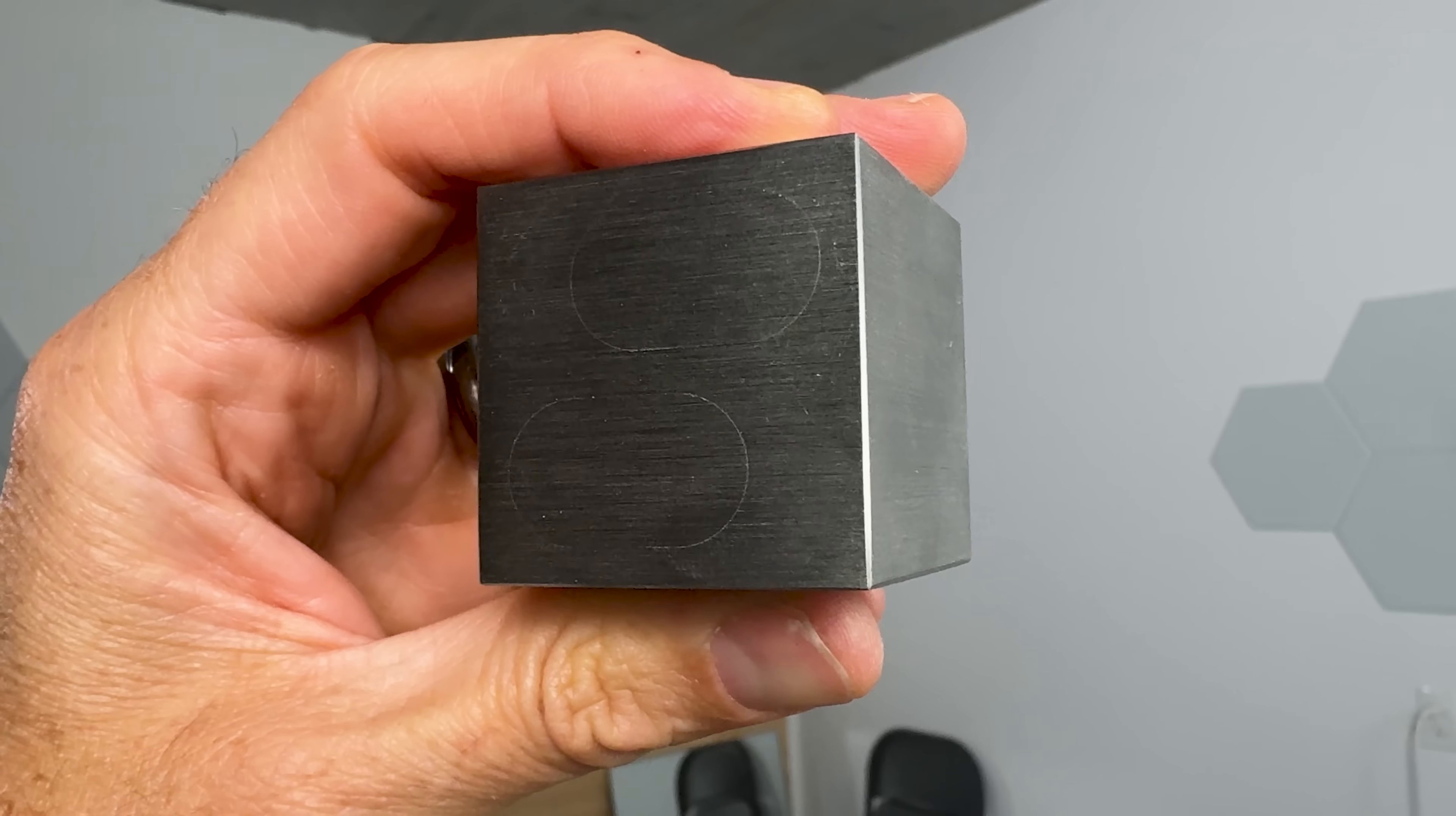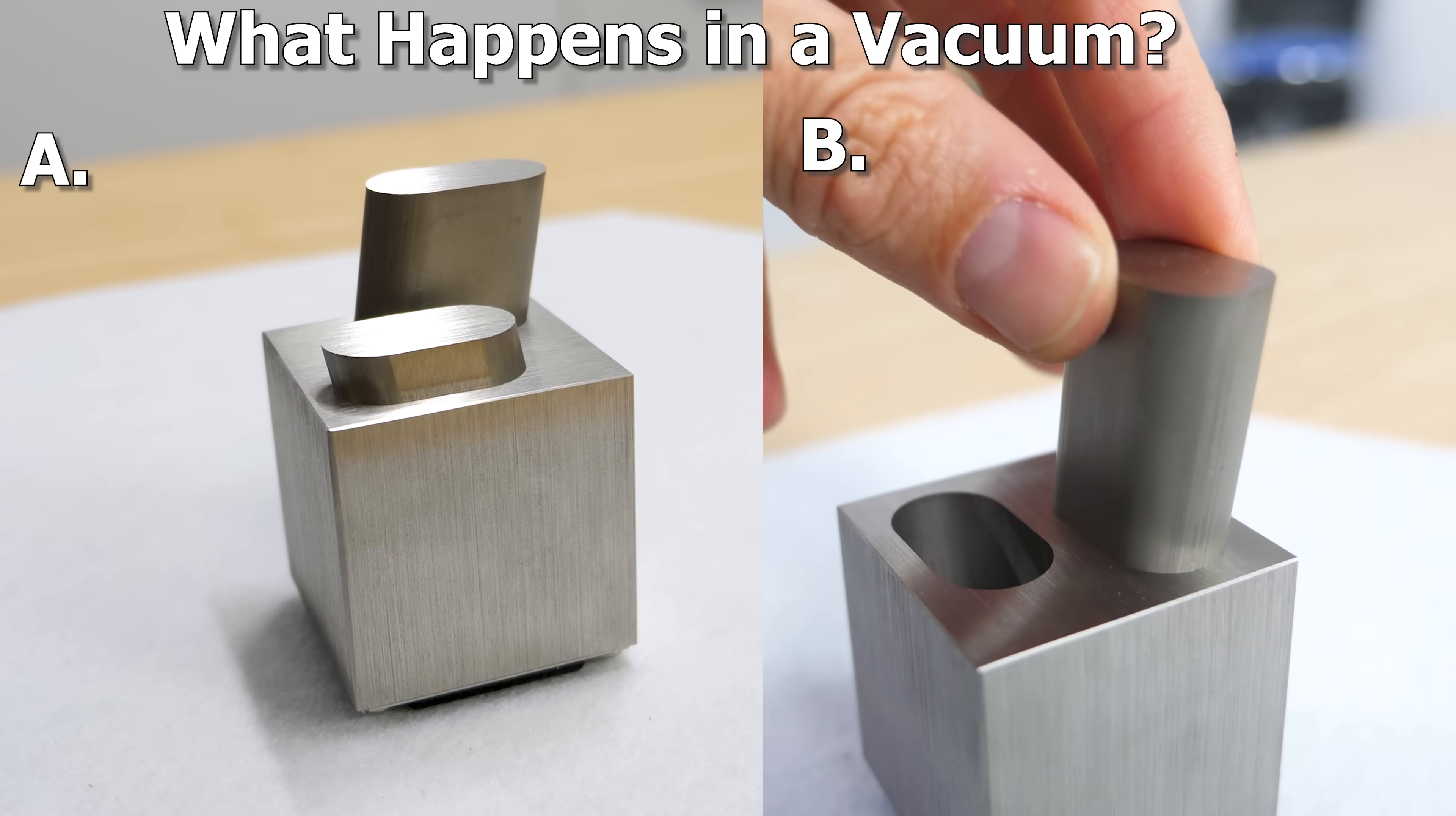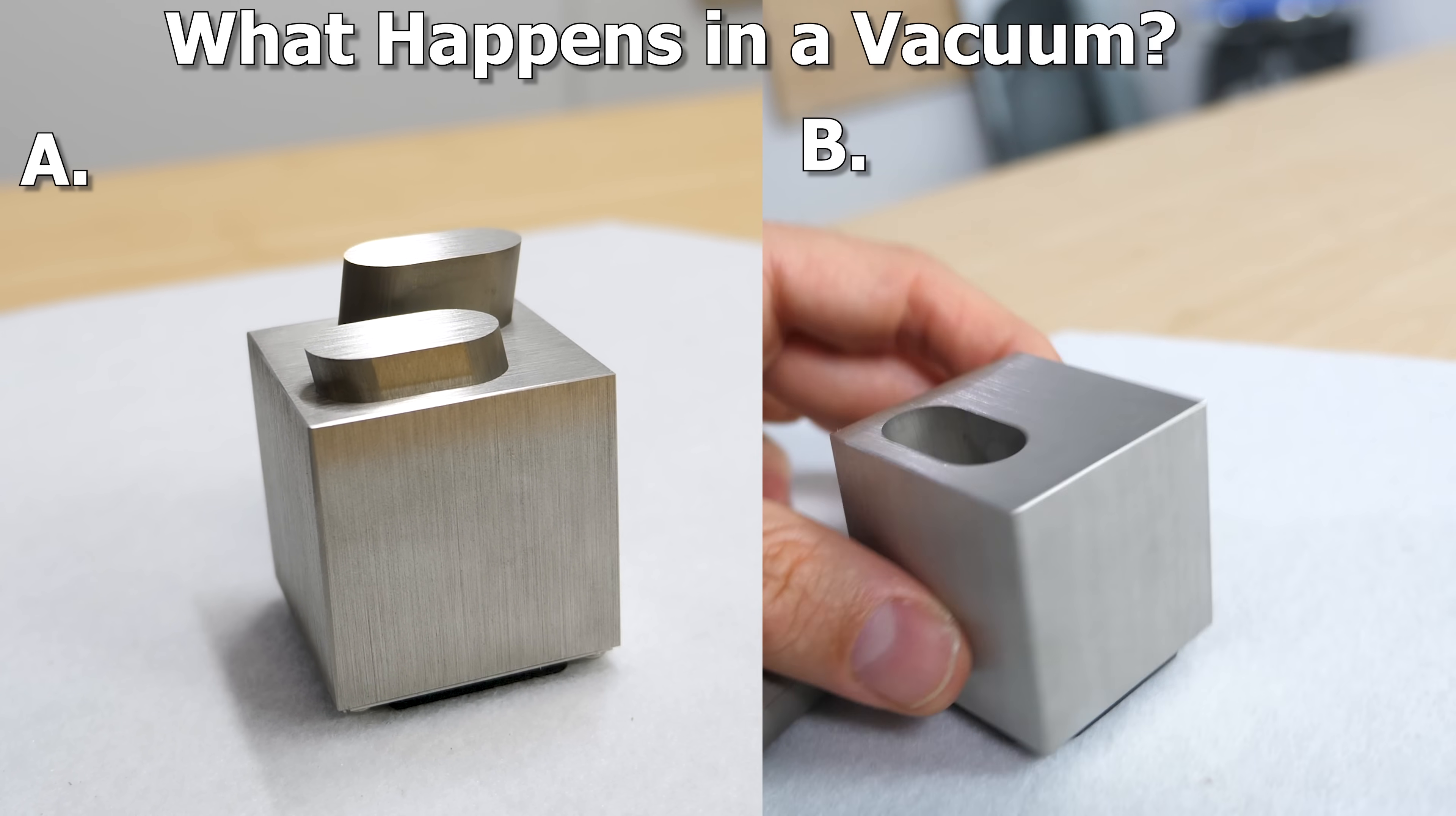So that made me have a question. What would happen if this were done in a vacuum chamber? Will the pieces still fall slowly into their slots at very low pressures? Or will it just fall quickly like it did when I didn't have the other piece in here when air flow wasn't an issue?